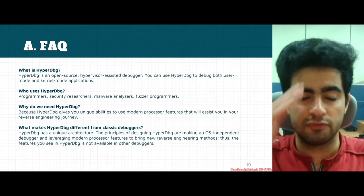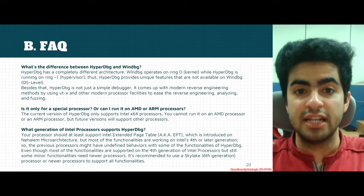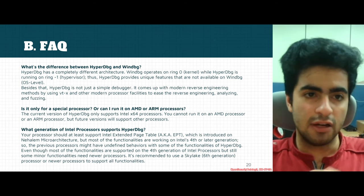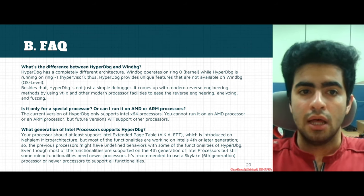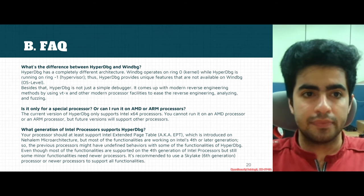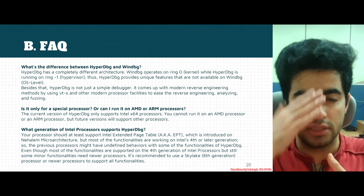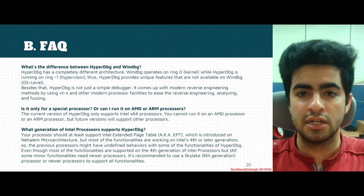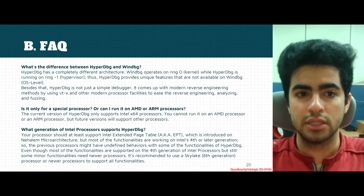What are the differences between HyperDBG and WinDBG? WinDBG is probably the most similar debugger in some aspects, but HyperDBG has a completely different architecture. WinDBG mainly operates in kernel mode or ring 0, while HyperDBG runs in ring minus 1, or hypervisor level. HyperDBG provides unique features that are not available at the OS level or in kernel mode.